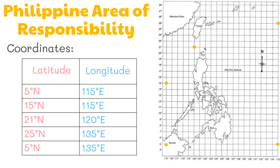Now that we have plotted the coordinates, let's connect these together. The region within the plotted points is called the Philippine Area of Responsibility. It is the job of the Philippine Atmospheric, Geophysical and Astronomical Services Administration, or PAGASA for short, to monitor all tropical cyclones that enter this area.